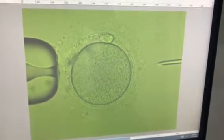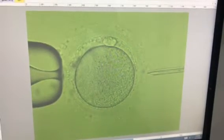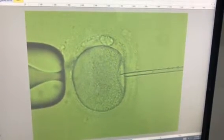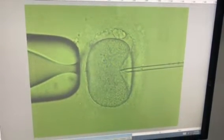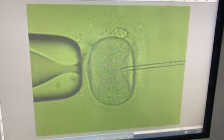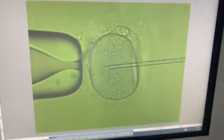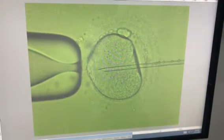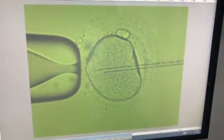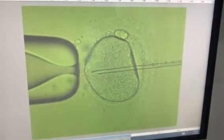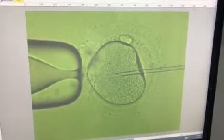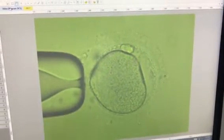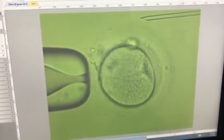This type of oocyte, if it is again failed fertilized, then it has to go for PGS. Beautiful arrangement of zona pellucida and polar body, no fragmentation in the polar body, slightly granular, but this is okay.